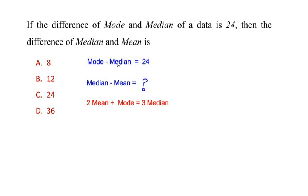So let us write down the mode in terms of median. Mode is equal to 24 plus median. Now this equation we got by just transferring the minus median on the other side of the equation. Now coming back to this equation.